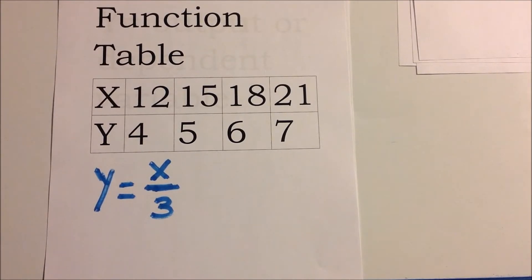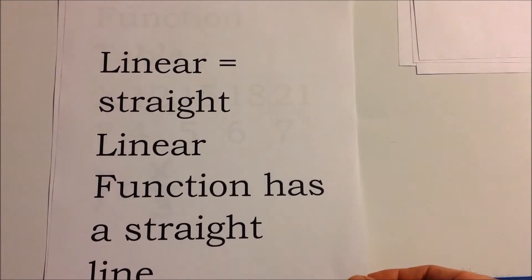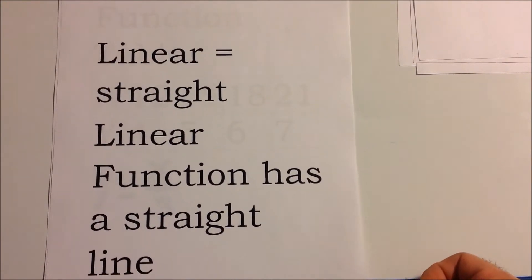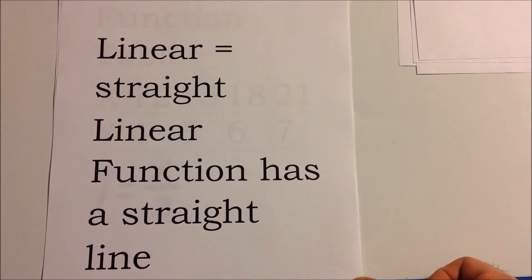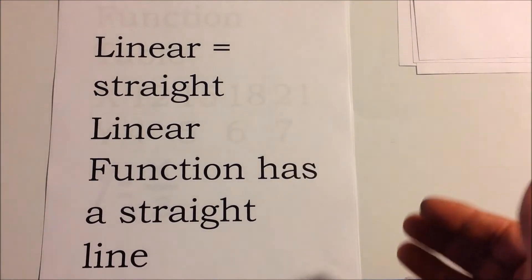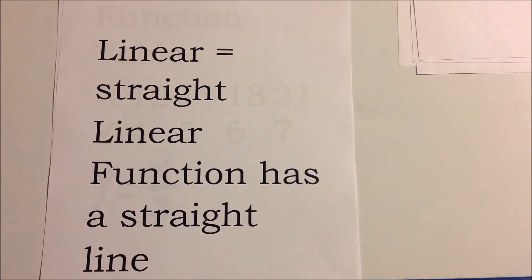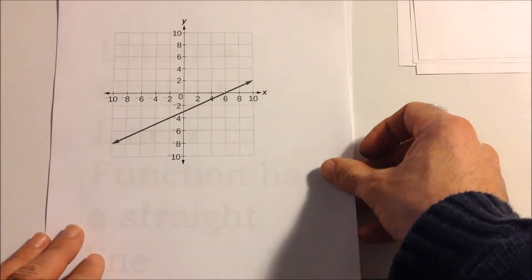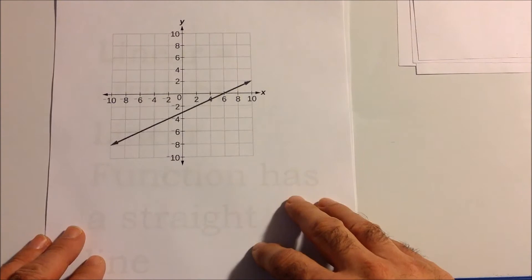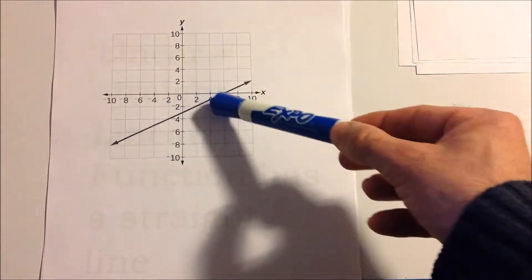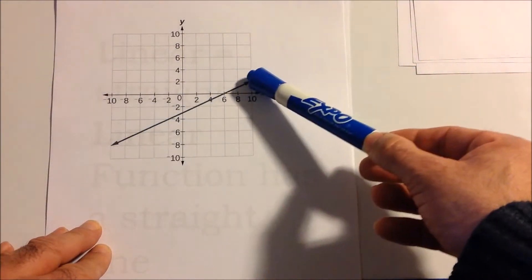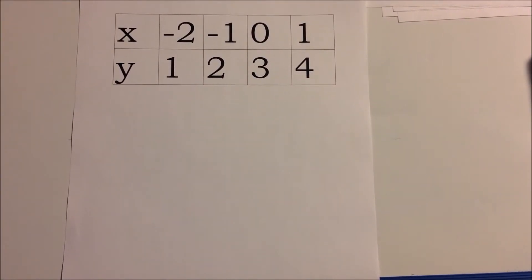There are some terms we need to know. 'Linear' means straight — it's a straight line. When we're doing linear functions, everything we do will create a straight line on a grid. We can graph function boxes on a Cartesian grid, which has four quadrants, and a straight line tells us it's linear.